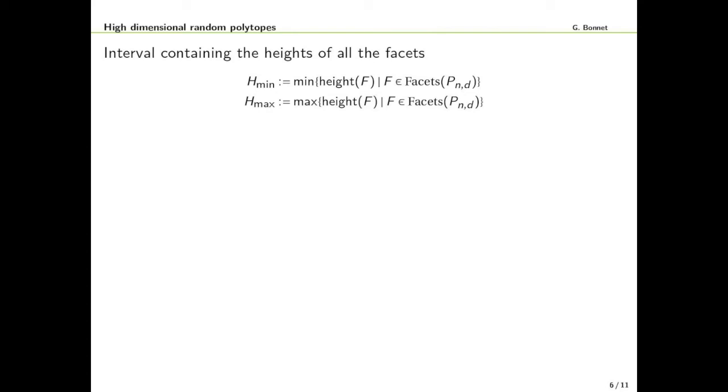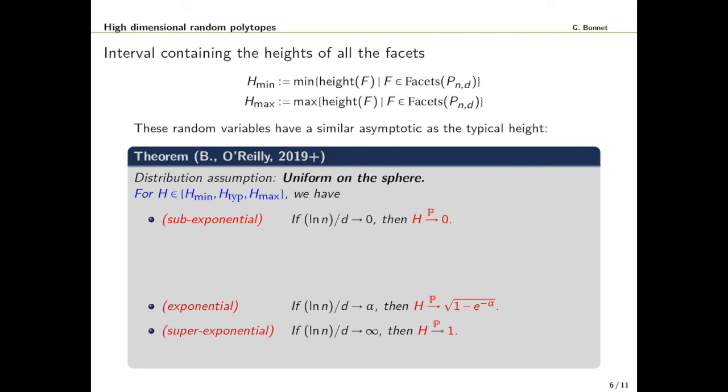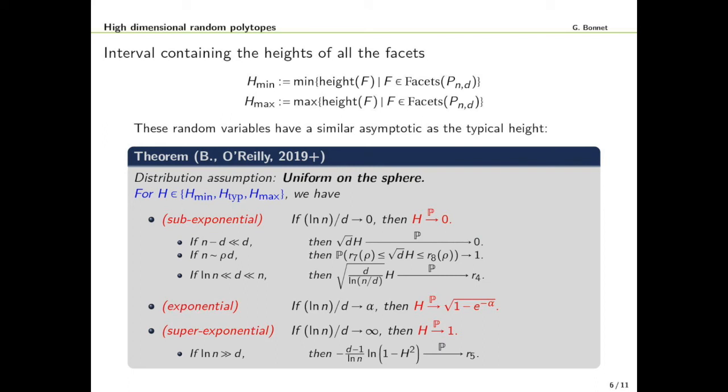As a complement to the typical height you might be interested to look at what is the minimal and the maximal height, what can you say about them. They will give you more global information of the polytope. We showed that actually they behave similarly to the typical height. At least for these three big families sub-exponential, exponential and superexponential we have the same behavior. When we consider more specific sub-regimes we obtain more precise results.